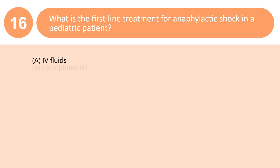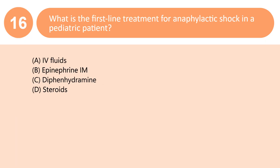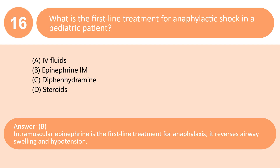What is the first-line treatment for anaphylactic shock in a pediatric patient? Answer: B. Intramuscular epinephrine is the first-line treatment for anaphylaxis. It reverses airway swelling and hypotension.